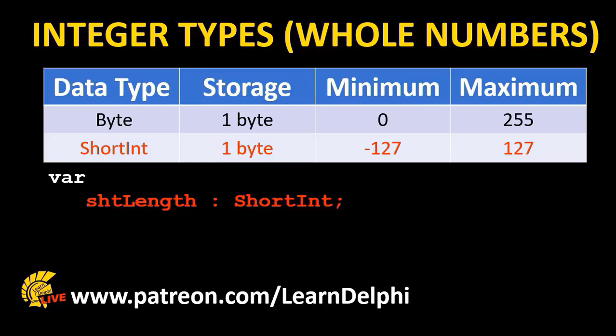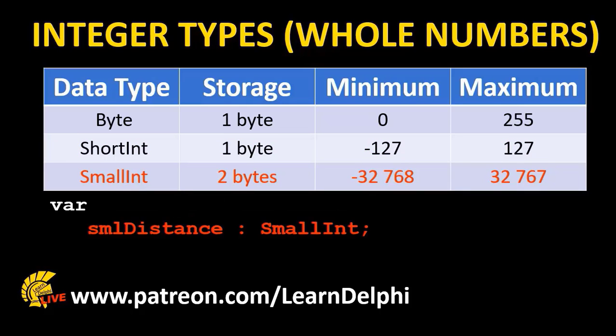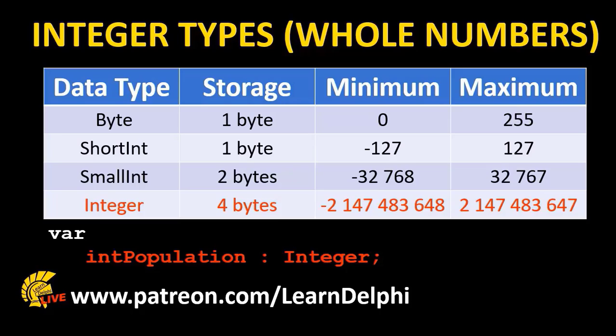Bigger than a byte is a small int. A small int reserves two bytes in storage. The range of numbers for a small int is minus 32768 to positive 32767, and we use 'sml' as the prefix for small int variables. Then we have integer. Although we call this one integer, all the others are also integers or whole numbers. The integer data type stores four bytes, and its range is from minus 2.1 billion to positive 2.1 billion.